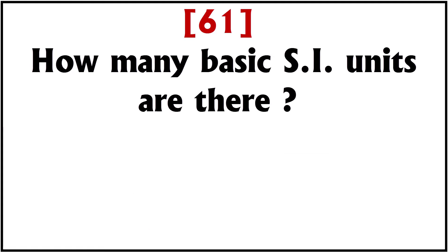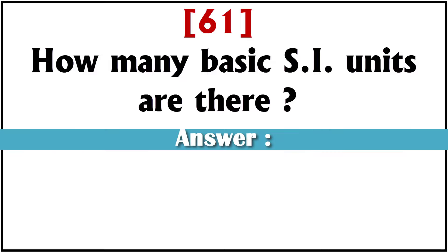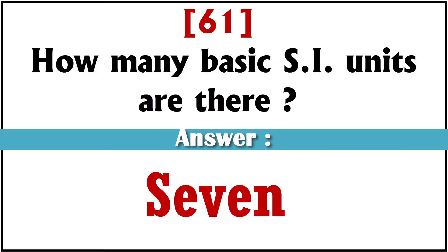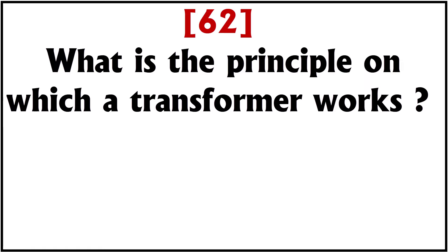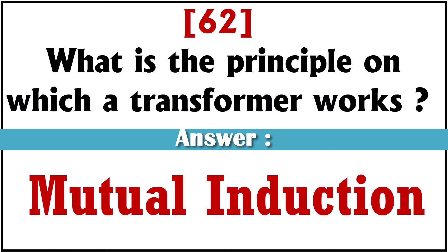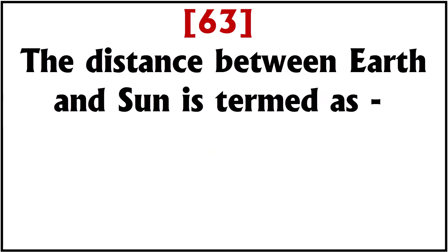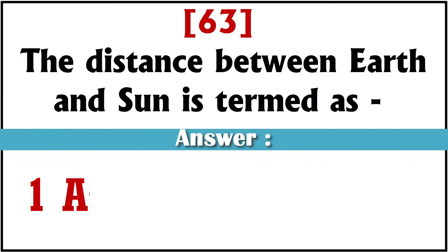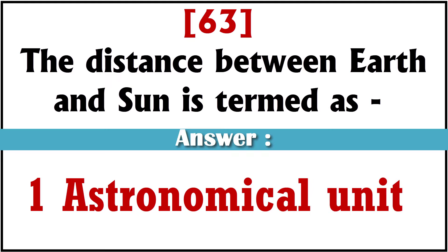How many basic SI units are there? Answer: Seven. What is the principle on which a transformer works? Answer: Mutual induction. The distance between earth and sun is termed as? Answer: One astronomical unit.